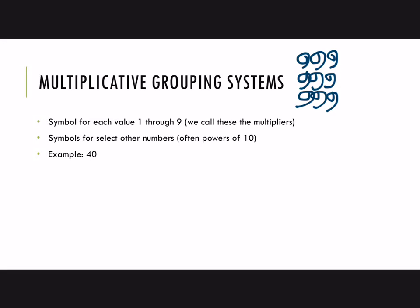In a multiplicative grouping system, we still use a symbol for each value one through nine. These are called the multipliers. Then there are symbols for select other numbers, often powers of tens, and you can think of these as similar to our place values.